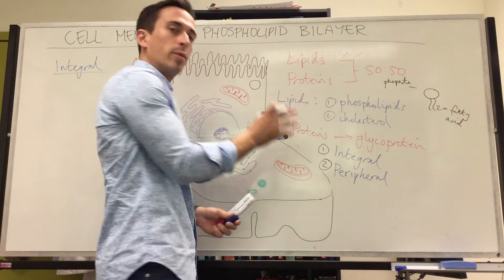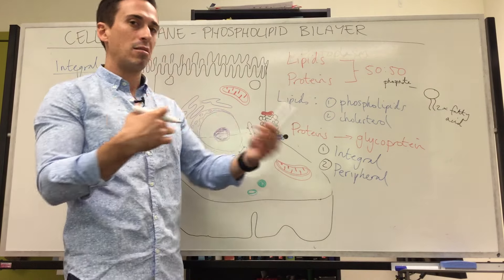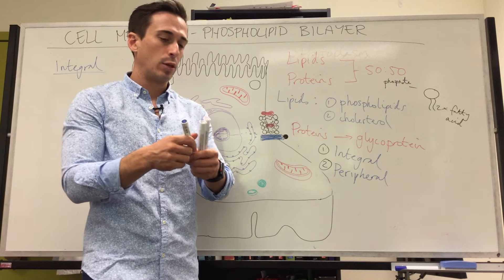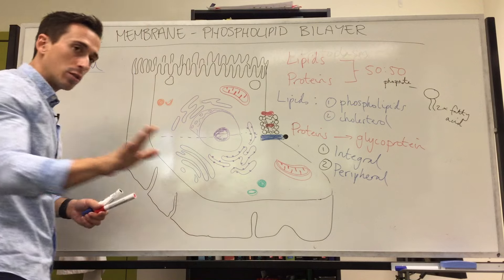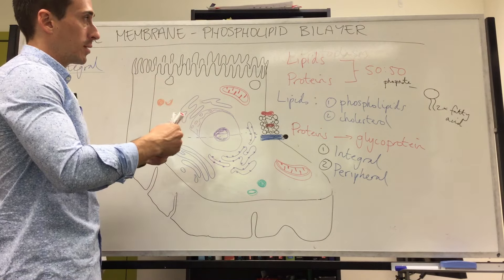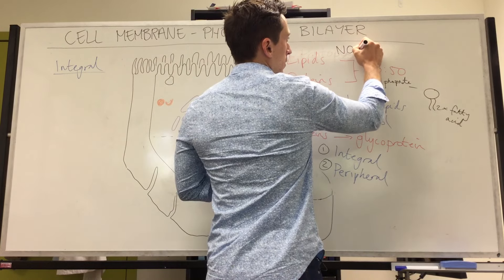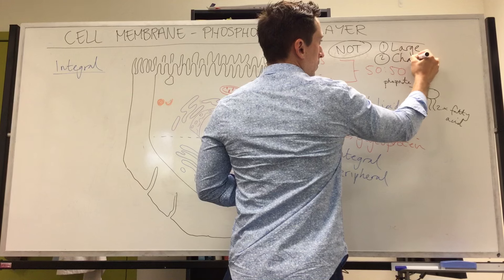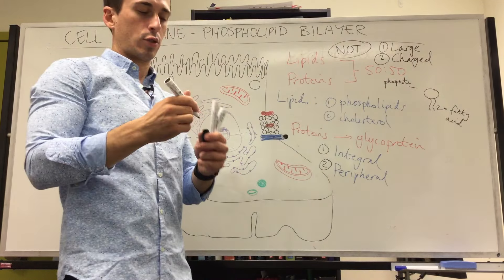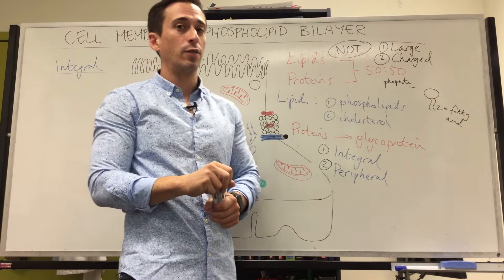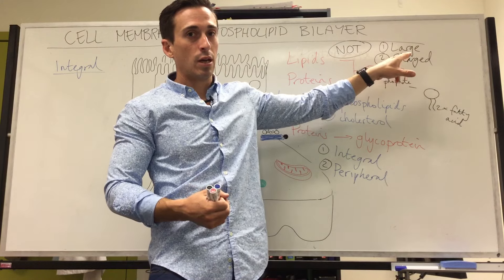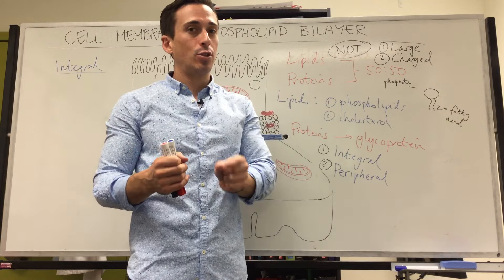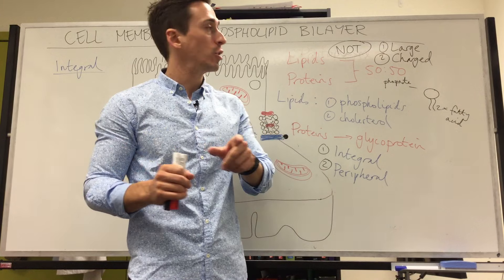The membrane is semi-permeable, and here's the rule of thumb for a phospholipid bilayer: it will not let through anything that is large or charged. Ions are charged atoms or elements—they're small, so you may think they can get through, but ions by definition are charged, so they cannot get through directly.